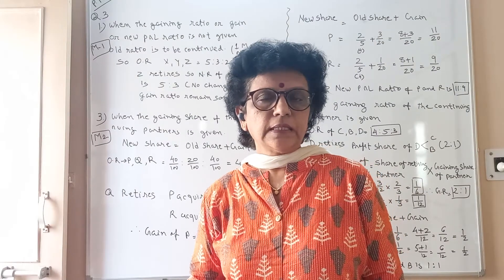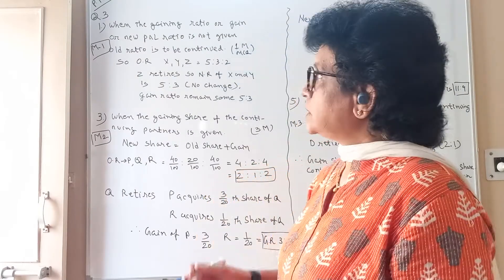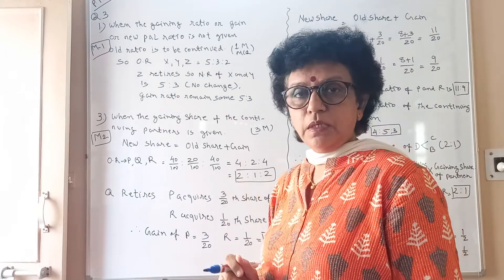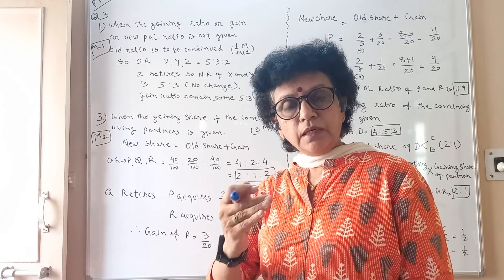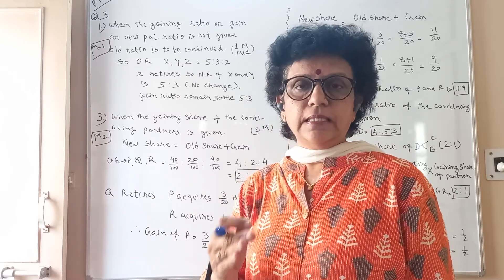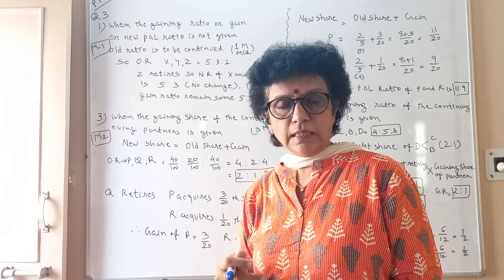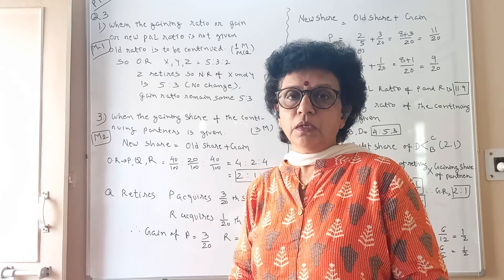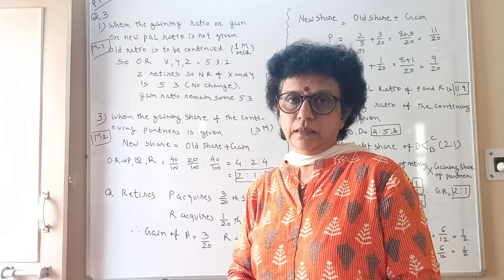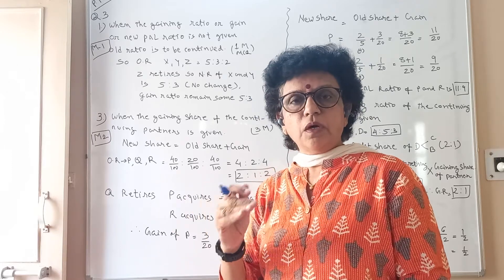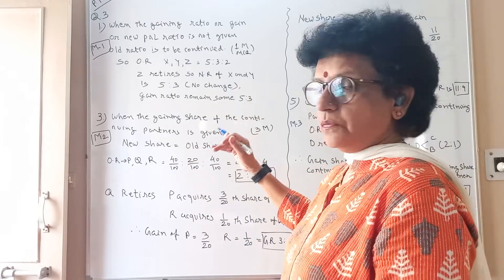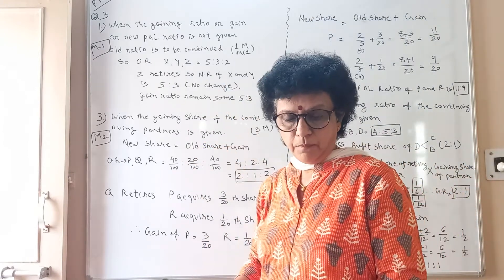Good morning students. Let us now continue our chapter number 6, question number 3, page number 264. Here the short sums are given. We have already understood that there are 4 methods to calculate the new share and new ratio of the remaining partner after the retirement, and what proportion they have. So one by one with the method we are going to work out the example.